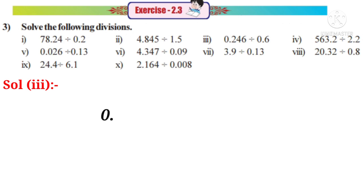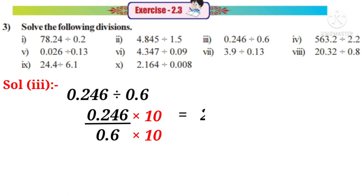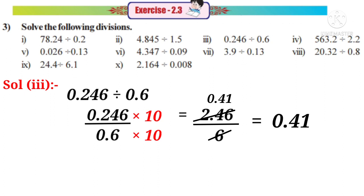Solution 3: 0.246 divided by 0.6, that means 0.246 by 0.6. Observe that there is only one decimal place in the denominator. So we have to multiply with a number which has only one zero after 1, that is by 10. The decimal place will shift right side after one digit. So it becomes 2.46 by denominator 6. On simplification by 6, the answer is 0.41.